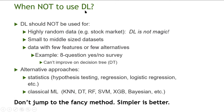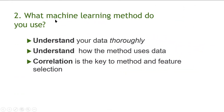If you don't use deep learning, you can use conventional statistics or classical machine learning such as k-nearest neighbors, random forest, support vector machine, and so on. Don't jump to the fancy method — simpler is always better. Try the simple method first; if it's good enough, use that. You need to understand your data thoroughly. Machine learning is not a substitute for human intelligence; it is an enhancement. Correlation is the key to selecting the method and the features from the data.